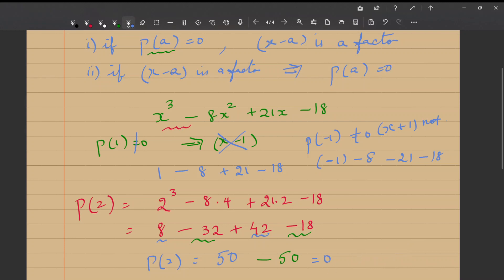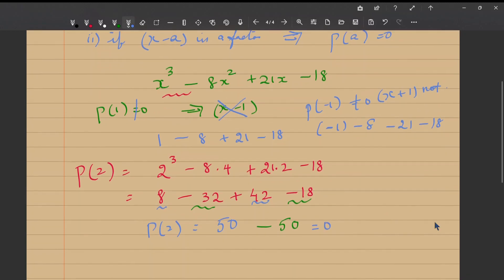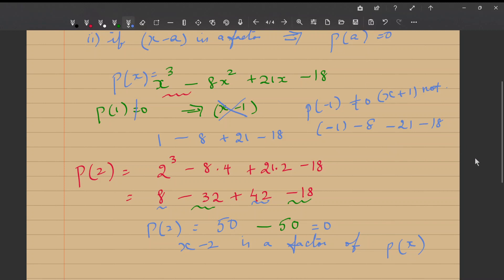So I can safely conclude that x minus 2 is a factor of, if I call this as P(x), it is a factor of P(x). Now, I should find other factors also. So now, I can do the long division method of polynomial and divide x³ - 8x² + 21x - 18 by x - 2. So let me do the long division.